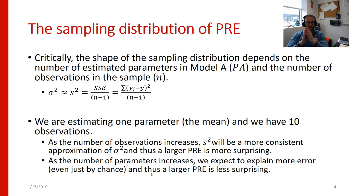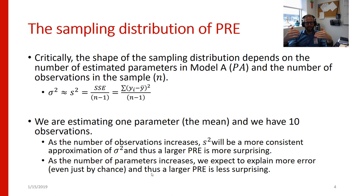Once we have that, we can actually start to make some calculations about the sampling distribution of the proportional reduction in error. Because once we have an estimate of the population variance, the other two things we need to know are the number of parameters that we're estimating and the number of observations in our sample. When we talk about the F distribution or the sampling distribution of PRE, it's really many different distributions — we have one for, say, estimating one parameter with 10 observations, but that sampling distribution would look different with 50 or 100 observations.